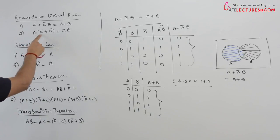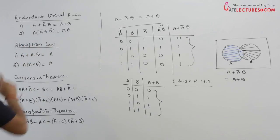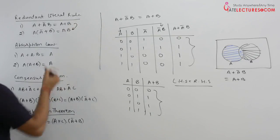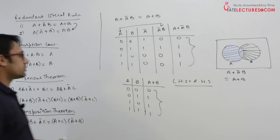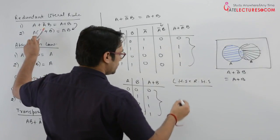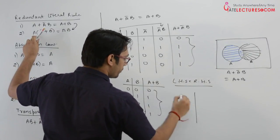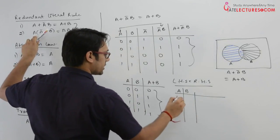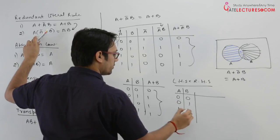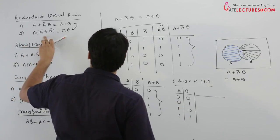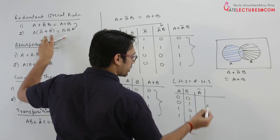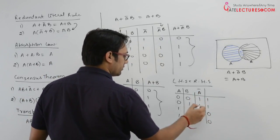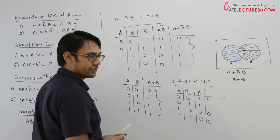Next is A dot A complement plus B, which is equal to AB. As you can see, this is just the dual form of the first rule, but we can still prove it. With A and B having combinations 00, 01, 10, 11, A complement is 1, 1, 0, 0. Then A complement plus B is 1, 1, 0, 1.